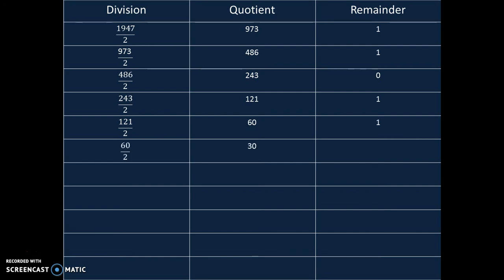60 divided by 2 is 30 with remainder 0. 30 divided by 2 is 15 with remainder 0. 15 divided by 2: quotient is 7 with remainder 1. 7 divided by 2 is 3 with remainder 1. 3 divided by 2: quotient is 1 with remainder 1. 1 divided by 2: quotient is 0 with remainder 1.